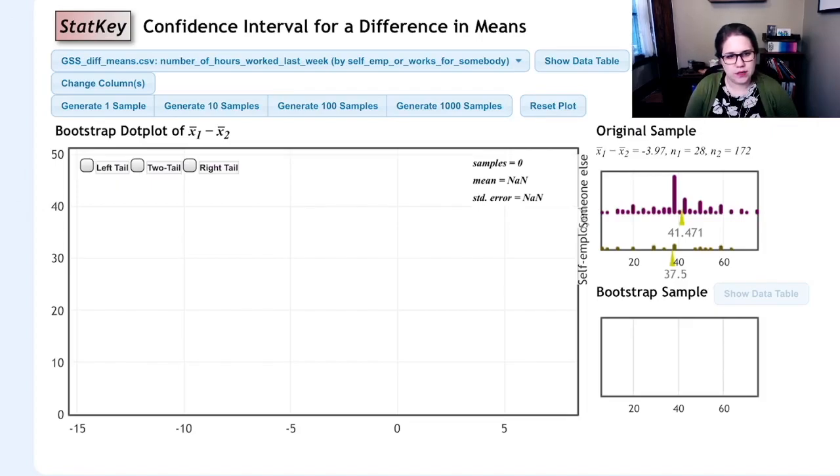We can see the observed difference in means there. It says x̄₁ - x̄₂ is -3.97. That's even more accurate than the -4 I had calculated.